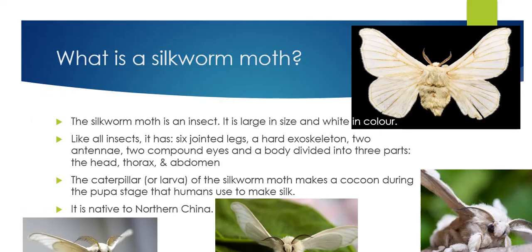Now we're going to talk about a silkworm moth. A silkworm moth is an insect — it is large in size and white in color, and it is actually found in China. An interesting fact is that the caterpillar of the silkworm moth makes a cocoon or chrysalis during the pupa stage, and humans actually use their cocoon to make silk — so we can't make silk without a silkworm moth. Like all insects, it has six legs, a hard exoskeleton, two antennae, two compound eyes, and a body divided into three parts: the head, the thorax, and the abdomen.